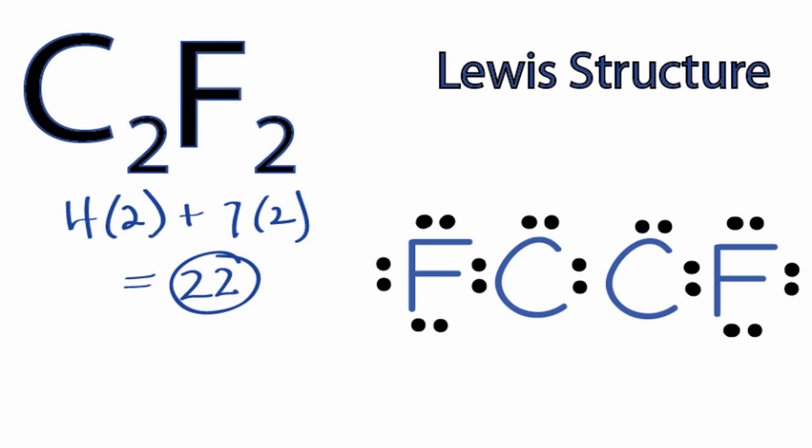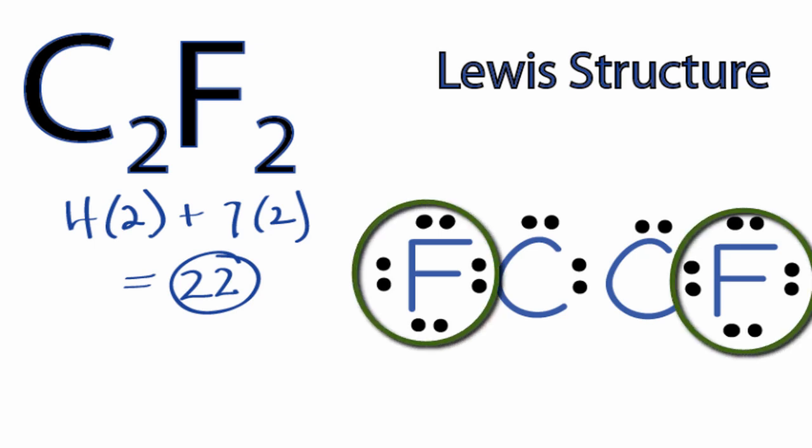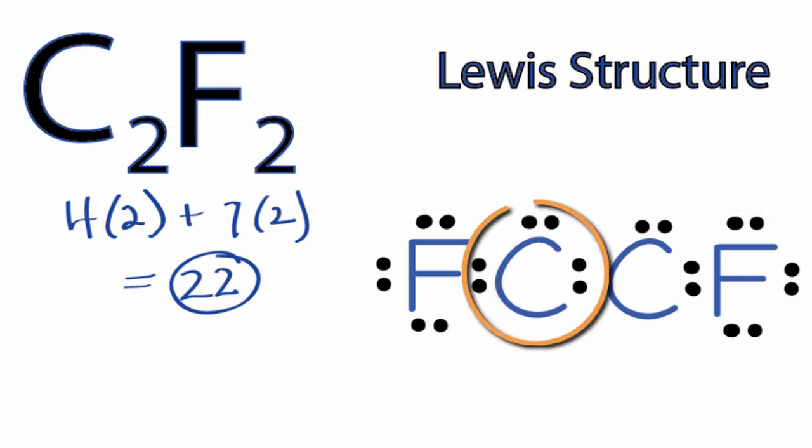So we've used all 22 valence electrons in the Lewis structure for C2F2. You can see that the fluorines have octets, but those two carbons in the center only have six valence electrons.